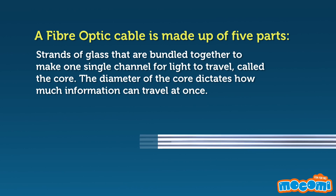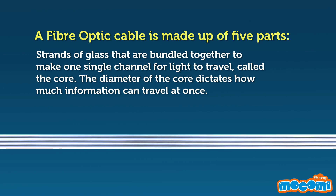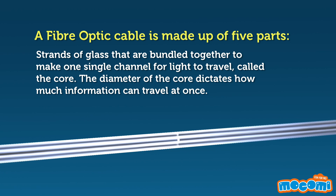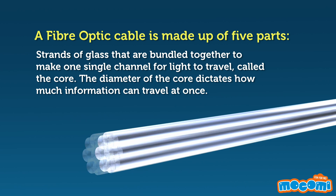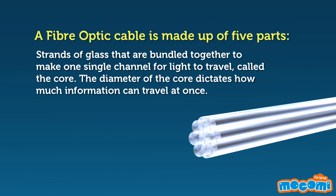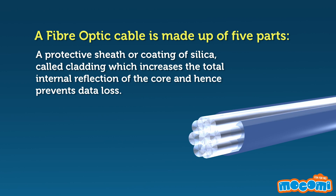A fiber optic cable is made up of five parts. Strands of glass are bundled together to make one single channel for light to travel, called the core. The diameter of the core dictates how much information can travel at once. A protective sheet or coating of silica, called cladding, increases the total internal reflection of the core and hence prevents data loss.